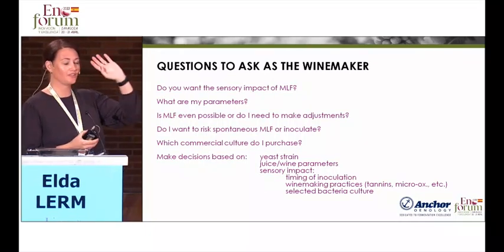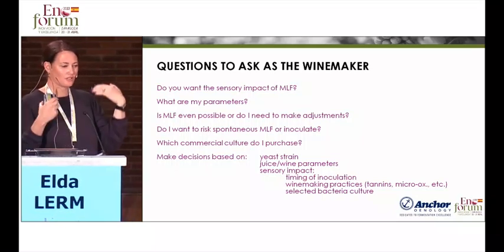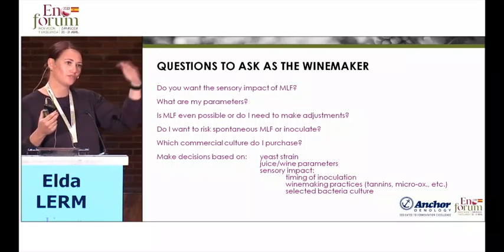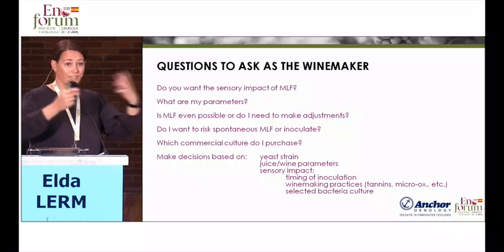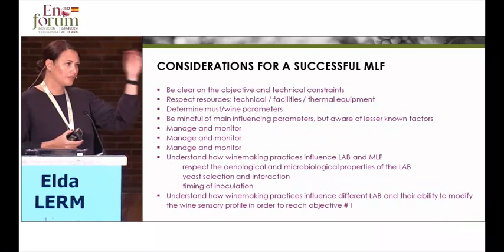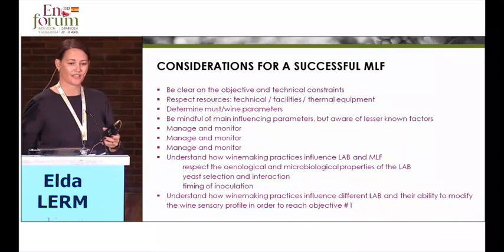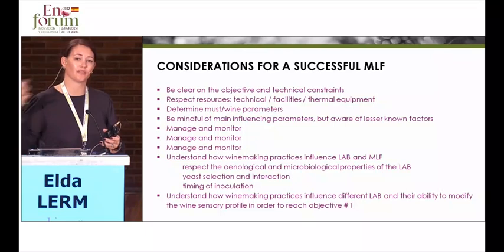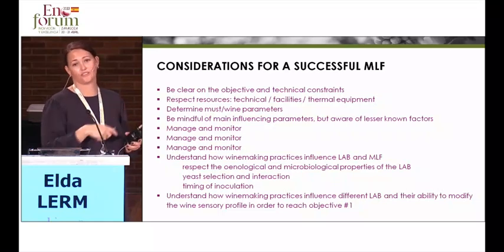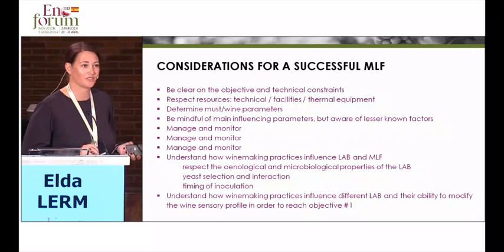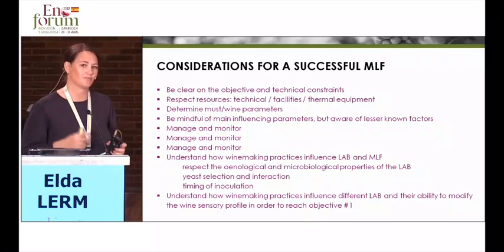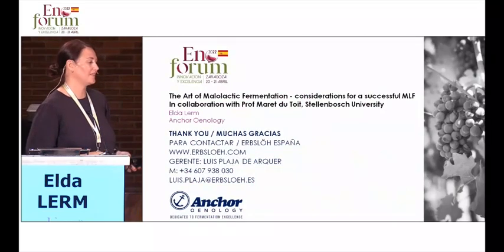As a winemaker, you really have a responsibility to ask certain questions: what is the sensory impact you want from the bacteria you're going to add? And then you have to make all four of those main decisions we discussed based on what you have to work with — the pH of your juice, the sulfur levels, etc. Really decide what you want, and then understand how the decisions you make in the winemaking process will influence your bacteria to get to that final result. Manage and monitor is on the list three times, because people tend to be very focused on managing alcoholic fermentation and forget about the bacteria. You need to follow the process and make sure you understand what's happening. Muchas gracias.